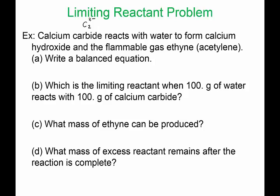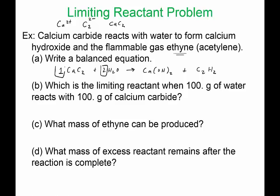Here's the reaction: CaC₂ + 2H₂O → Ca(OH)₂ + C₂H₂. We go ahead and balance this — and it's actually already balanced. So we have one CaC₂, two H₂O, one Ca(OH)₂, and one C₂H₂. The question asks: which is the limiting reactant when 100 grams of water reacts with 100 grams of calcium carbide?